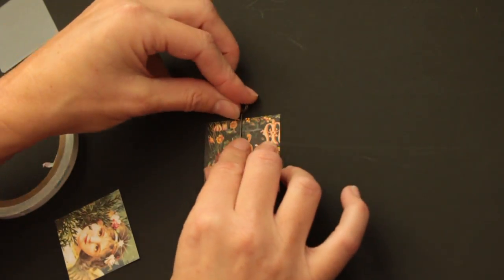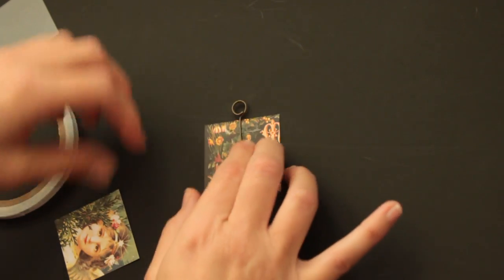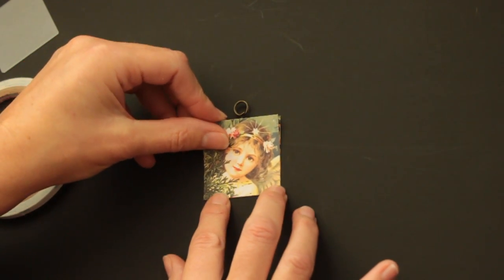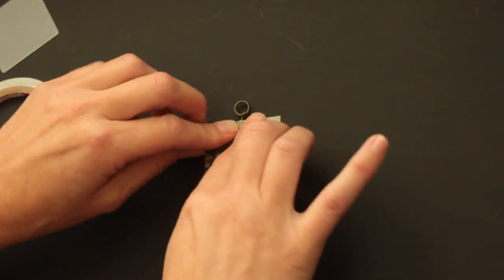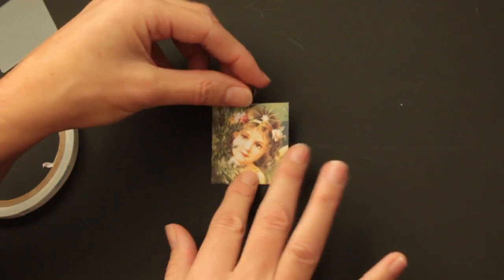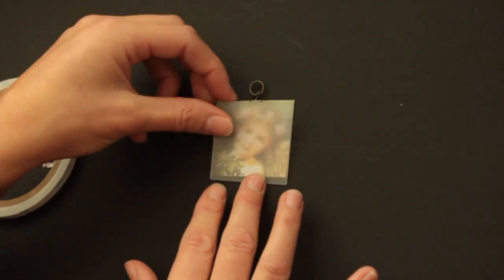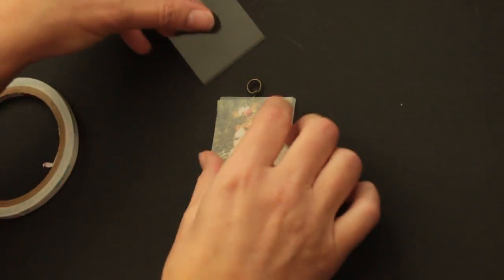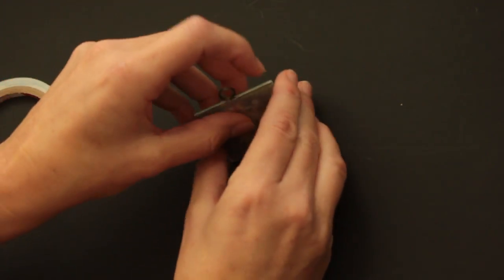I'm going to scoot it down just a little bit more to center it. I'm using two images, one plain for the back and one angel for the front. Again, I'm using frosted glass for the front and clear for the back.